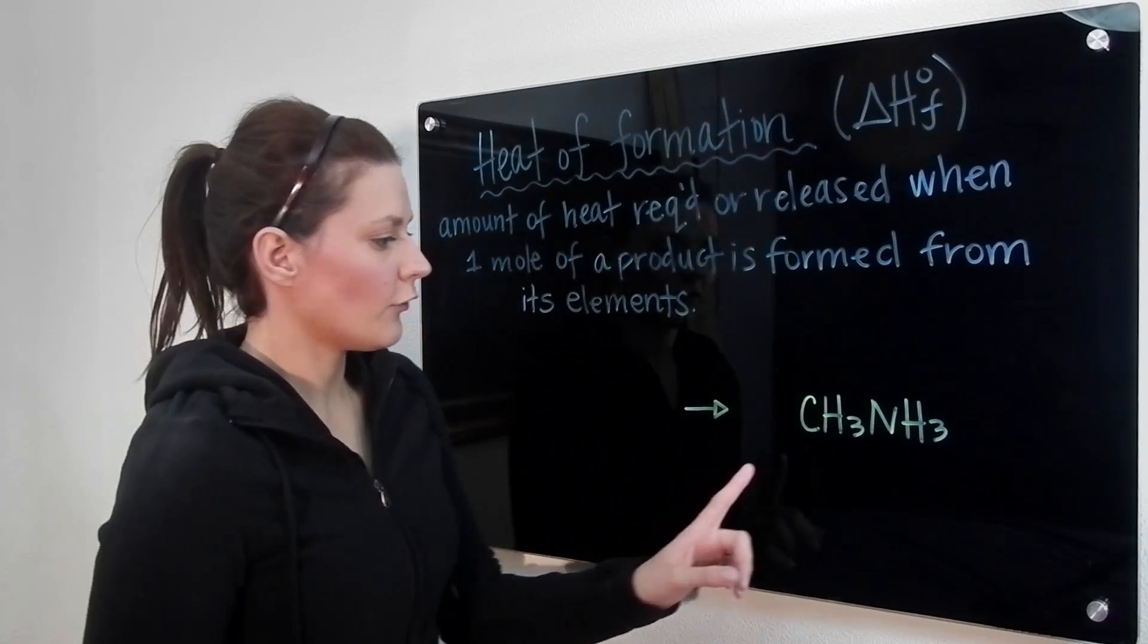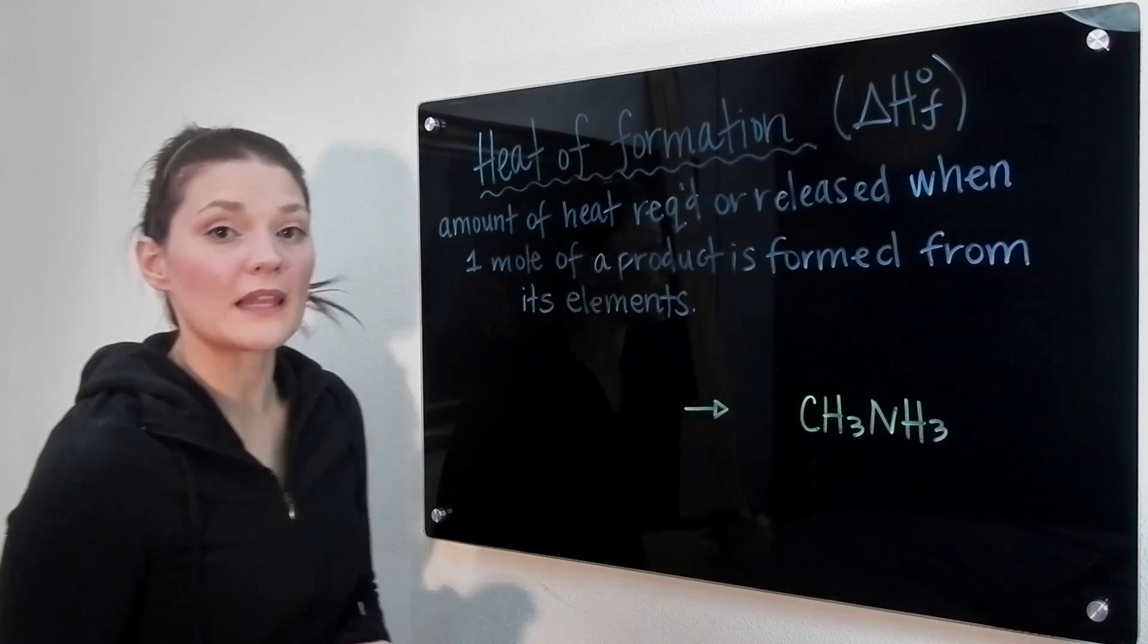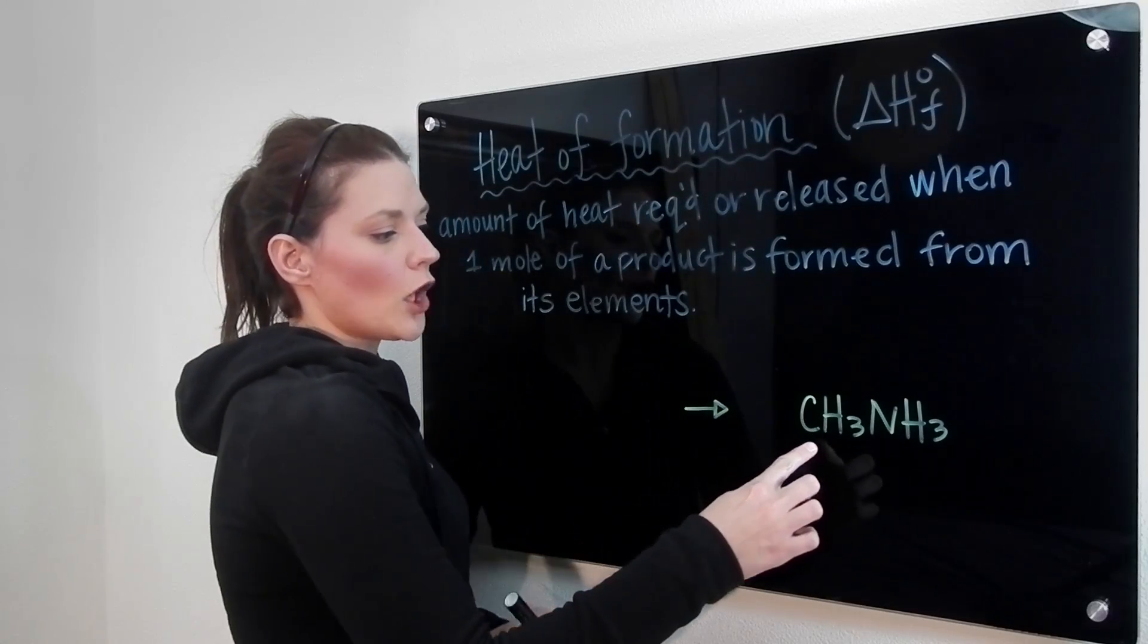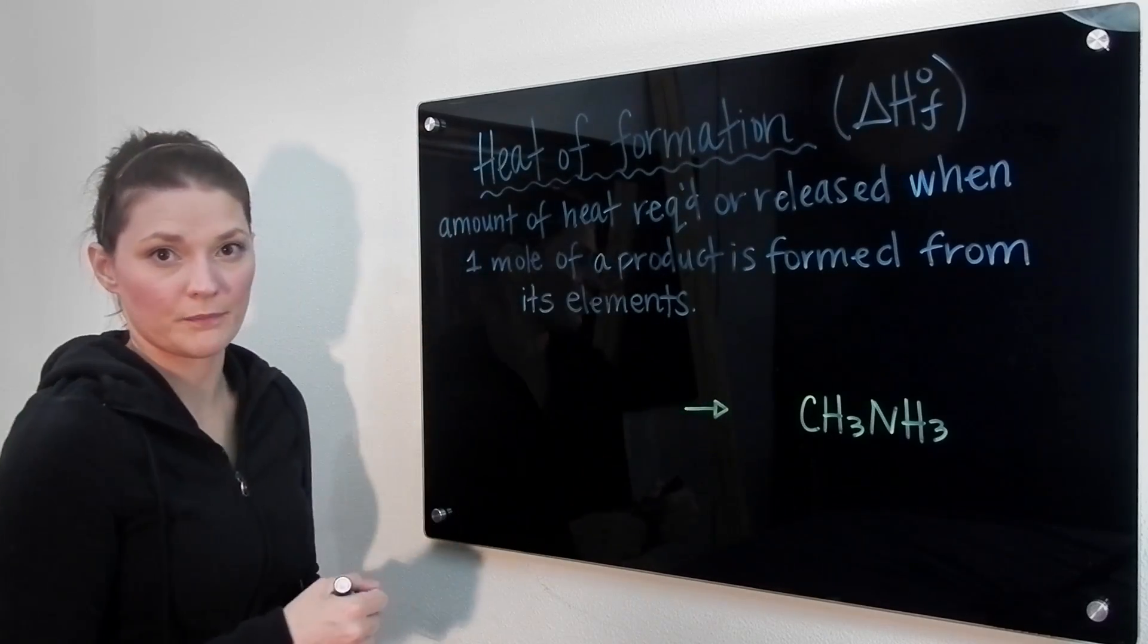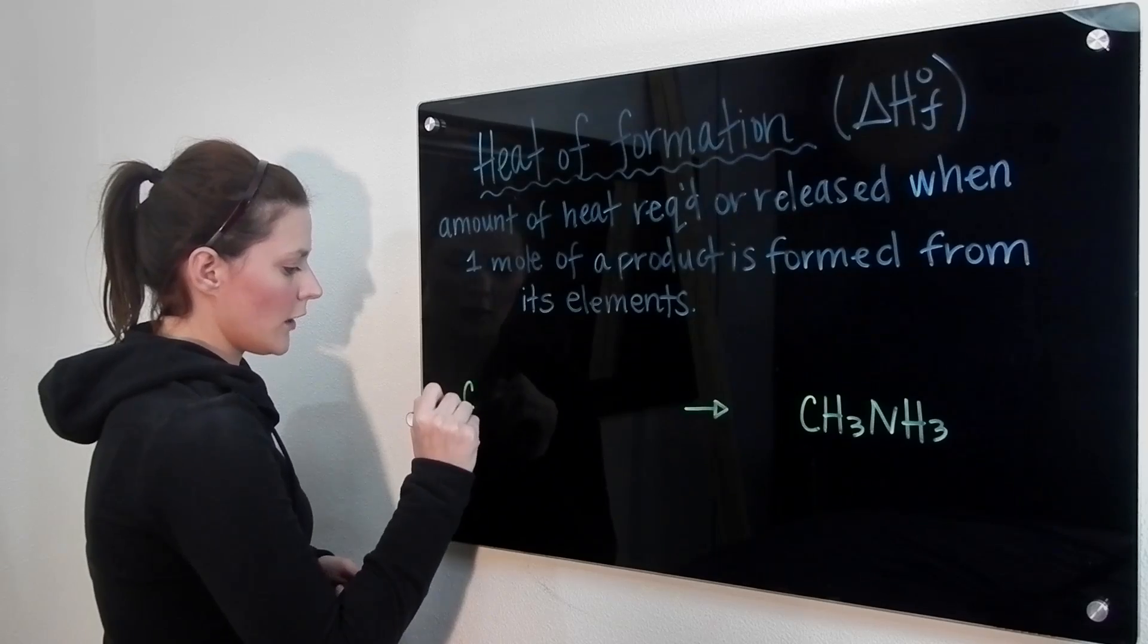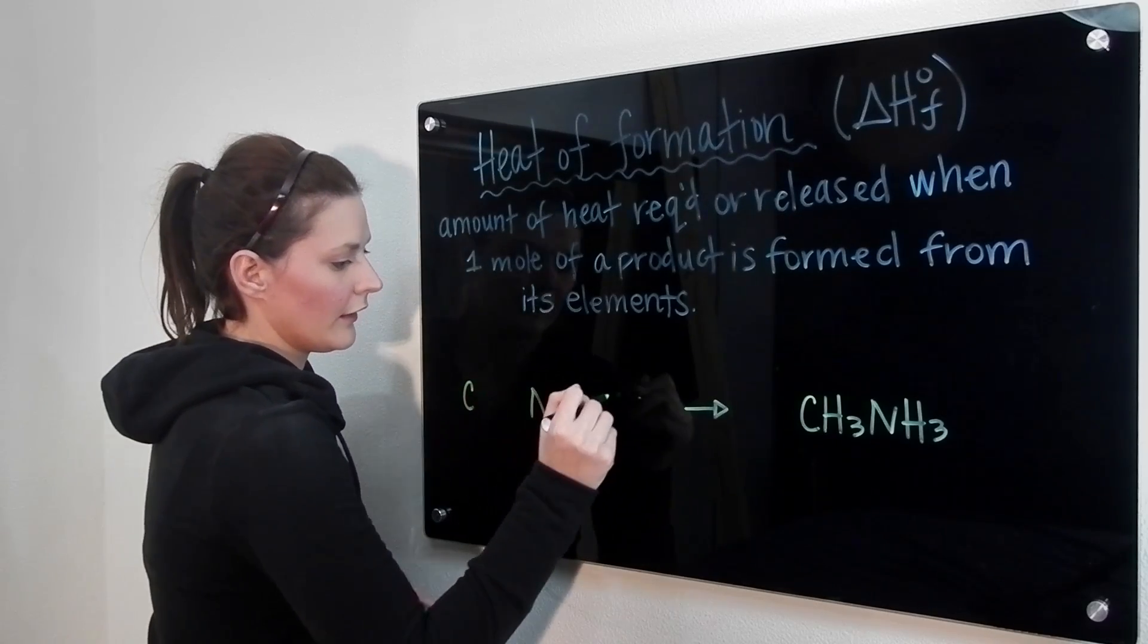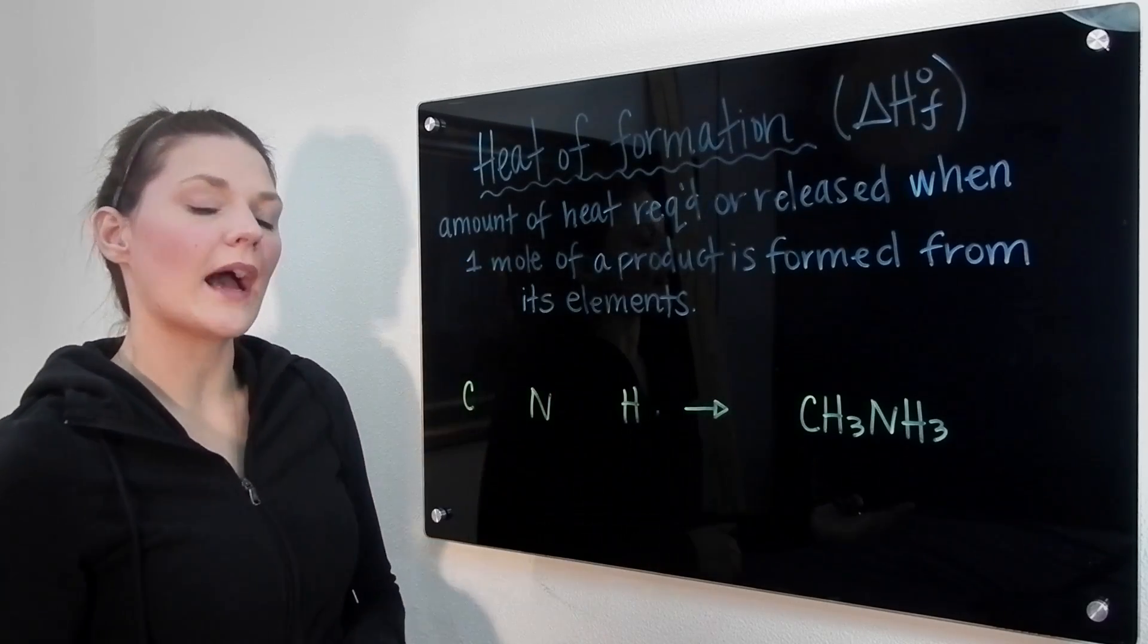For example, if we take a look at this methyl amine, we notice that it is made of carbon, hydrogen, and nitrogen. So what we're going to do is take the carbon, the nitrogen, and the hydrogen here and separate the elements out.